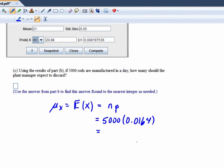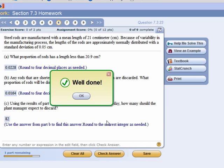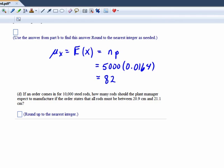And that's going to give us on the nose 82. Really nice, 82, well done. And lastly, if an order comes in for 10,000 steel rods, we have to figure out how many should the plant manager expect to manufacture if the order states that all rods must be between 20.9 and 21.1 centimeters.